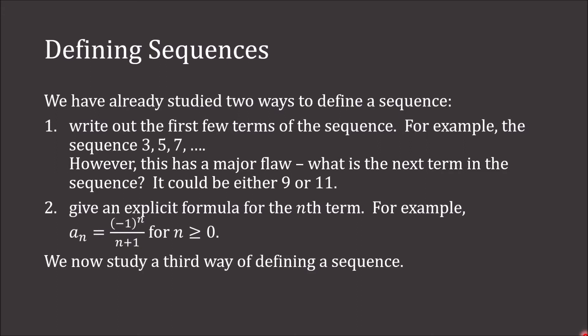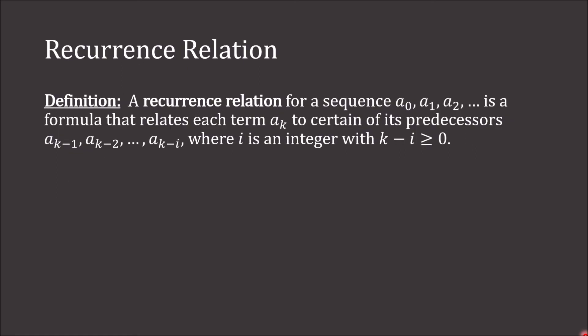We now study a third way of defining a sequence: a recurrence relation, which is simply a formula that relates each term a sub k to certain of its predecessors — a sub k minus 1, a sub k minus 2, up through a sub k minus i, where i is an integer with k minus i being greater than or equal to 0.